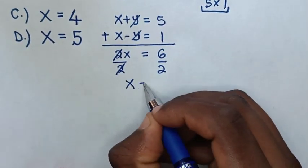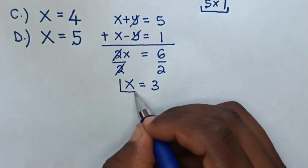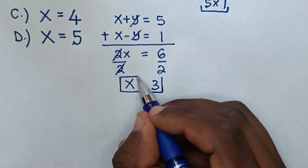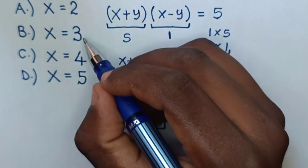Then x equals 6 divided by 2, which is 3. So this is the final answer for the value of x. To select in the multiple choice, it is B.